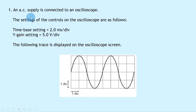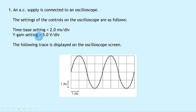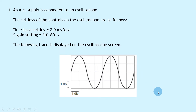Question one says that an AC supply is connected to an oscilloscope. The settings of the controls on the oscilloscope are as follows: the time-based setting is equal to 2.0 milliseconds per division and the Y-gain setting is set to 5.0 volts per division. The following trace is displayed on the oscilloscope screen. Each box is a division and we've got two waves appearing in this pattern.